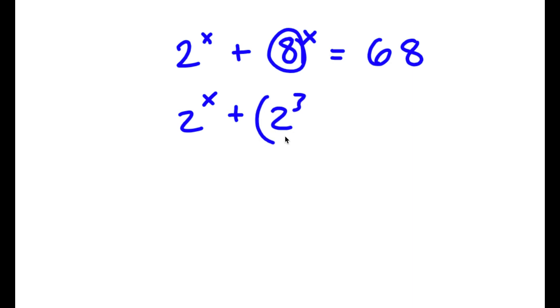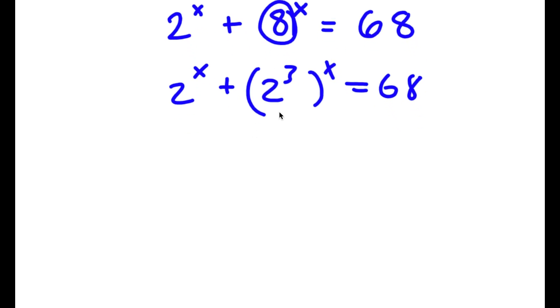So now I have 2 to the power of x plus 2 to the power of 3 to the power of x, which by the power-of-power rule becomes 2 to the power of x plus 2 to the power of 3x, and this equals 68.